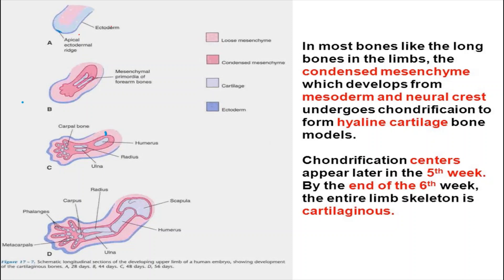In most long bones, condensed mesoderm developing from the somatic mesoderm and neural crest cells undergoes chondrification to form hyaline cartilage. The chondrification centers appear in the fifth week, and by the end of the sixth week the entire limb skeleton is cartilaginous — forming the scapula, humerus, radius, ulna, carpal bones, and phalanges. This cartilage then undergoes endochondral ossification to form bones.